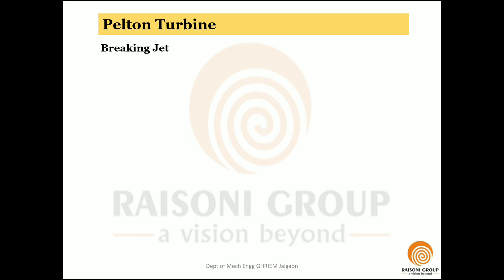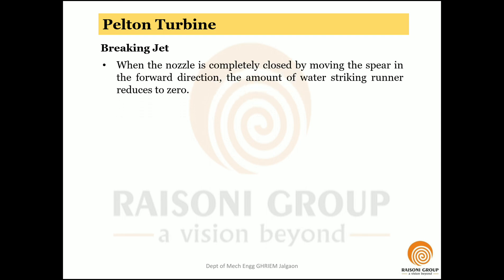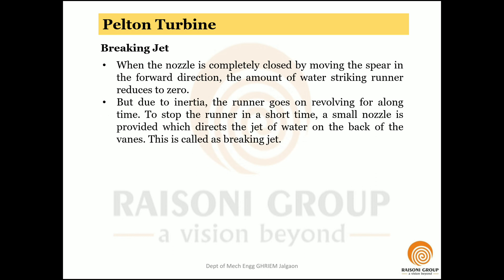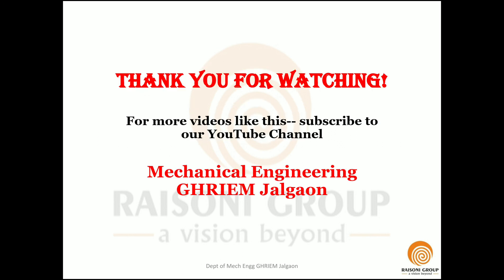The fourth part is the breaking jet. When the nozzle is completely closed by moving the spear forward, the amount of water striking the runner reduces to zero. However, due to inertia the runner continues revolving. To stop the runner in a shorter time, a small nozzle is provided which directs a jet of water onto the back of the buckets — the opposite side from normal. This jet reduces the runner's motion and brings it to a stop, and is therefore called the braking jet.